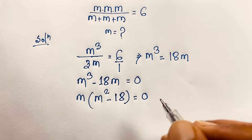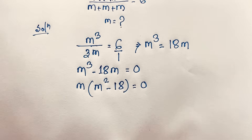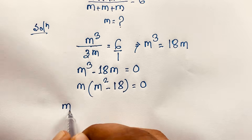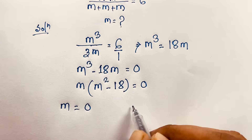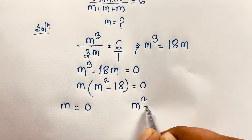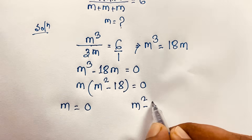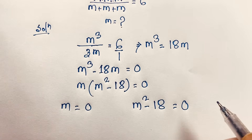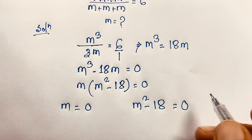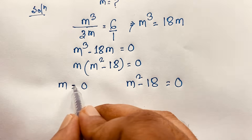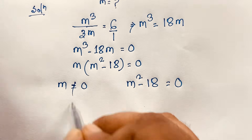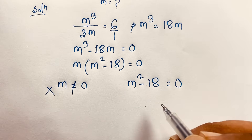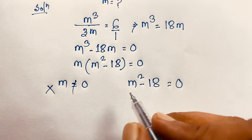Now we find two cases. Our first case is m is equal to 0. In the other case, m squared minus 18 is equal to 0. Now you can see here m equals 0 is not possible — it is rejected. So we look at m squared minus 18 equals 0.